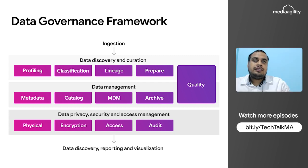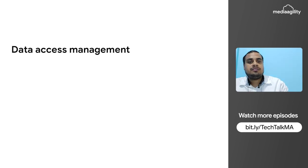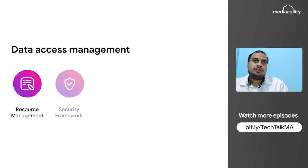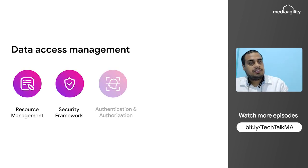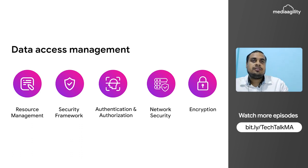In the data governance framework, the first step is data access management. In data access management we do resource management, security framework, and authentication and authorization. Then we do network security and encryption. These are the steps covered in data access management.